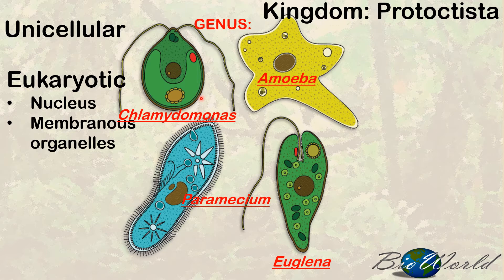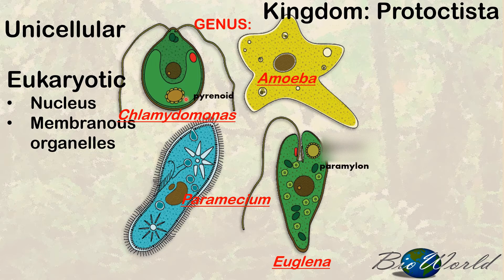If you look at chlamydomonas and euglena you will notice that they have been colored green to indicate that they are photosynthetic. To do photosynthesis they will need the organelle chloroplast. The chlamydomonas has a cup-like chloroplast whereas the euglena has circular-shaped chloroplasts. They both have the red eye spot to help detect the presence of sunlight, and products of photosynthesis are stored in an organelle called the pyrenoid. Euglena can also convert the product of photosynthesis into a polysaccharide called paramylon, stored as granules in the cytoplasm.